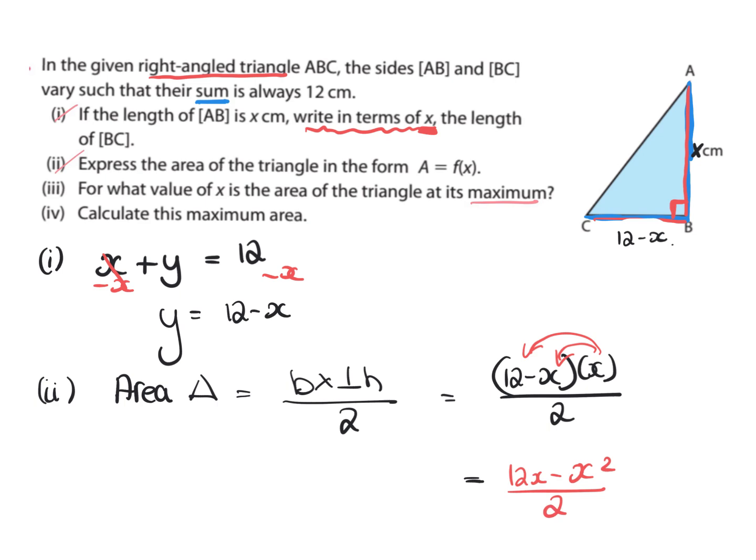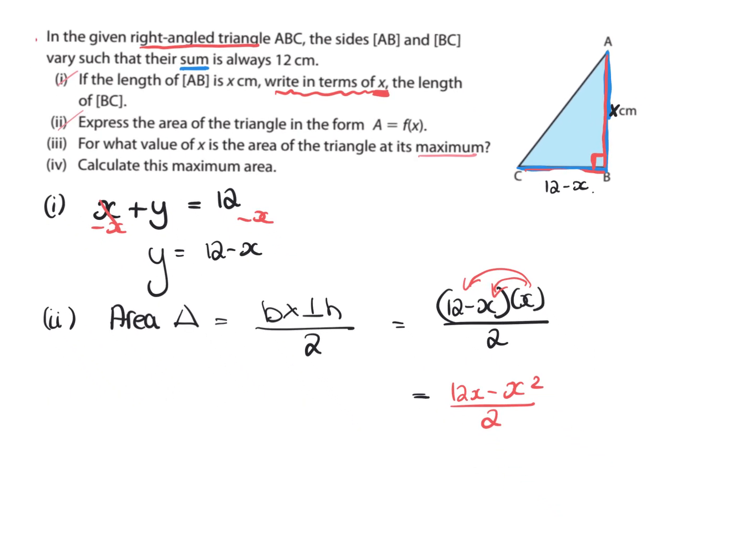I've got a little bit of work to do here, so I'm going to work out the top of this fraction. I'm going to work out x by 12 gives me 12x, and x by -x gives me -x² all over 2. And we can break that down a little bit more.